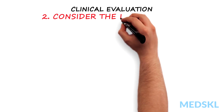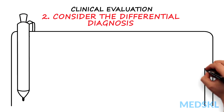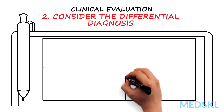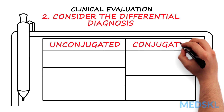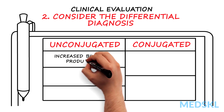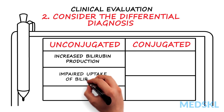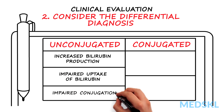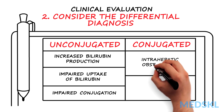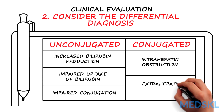Second, consider the differential diagnosis. One way to categorize the causes of jaundice is by looking at whether the high bilirubin is predominantly unconjugated or conjugated. High levels of unconjugated bilirubin can be due to increased bilirubin production secondary to hemolysis, impaired uptake of bilirubin by the liver, or due to impaired conjugation of bilirubin within the liver. High conjugated bilirubin levels can be due to intrahepatic diseases, such as hepatocellular or cholestatic liver disease, or extrahepatic bilirubin obstruction.